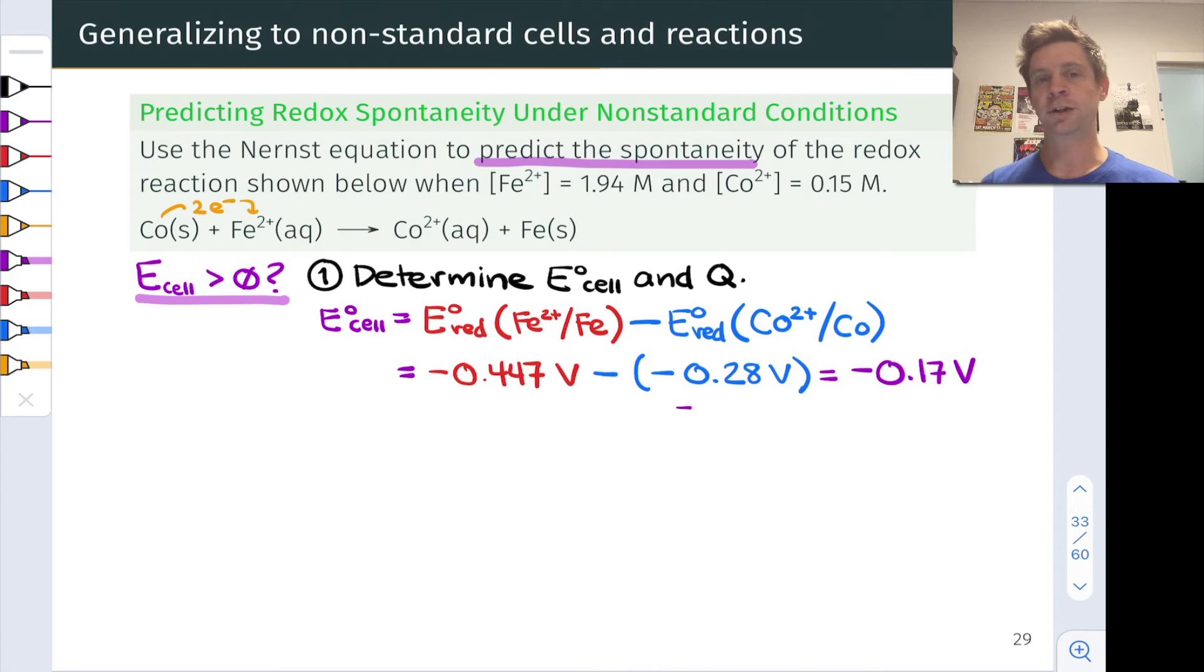This may or may not be the case under non-standard conditions like we're given in the problem. So we also need to consider Q and plug into the Nernst equation and see whether the non-standard cell potential goes positive. There's still a possibility of this happening if the value of Q is right. Just like we did back in the fundamental equilibrium concepts unit, we're going to think of Q as the concentrations of products divided by the concentrations of reactants using exponents where we see stoichiometric coefficients that are not 1. The form of Q comes out to Co2+ molarity in the numerator and Fe2+ molarity in the denominator. When we plug in the given values here, we end up with a Q value of 0.077.